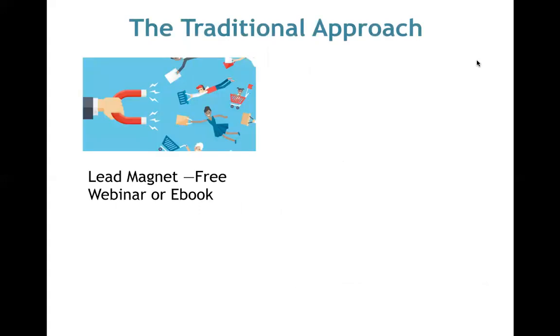So to drill this down a bit, let's cover the traditional approach — how up until very recently, you basically had to do this if you wanted to create passive income through an online course. On the front end of your marketing, you have what's called a lead magnet. Generally you create a free webinar or ebook — the webinar is about 45 minutes, the ebook is 20 to 30 pages. This is how you get people connected with your approach, build expert positioning, and build trust. It removes the randomness of people just seeing your name and not knowing who you are.